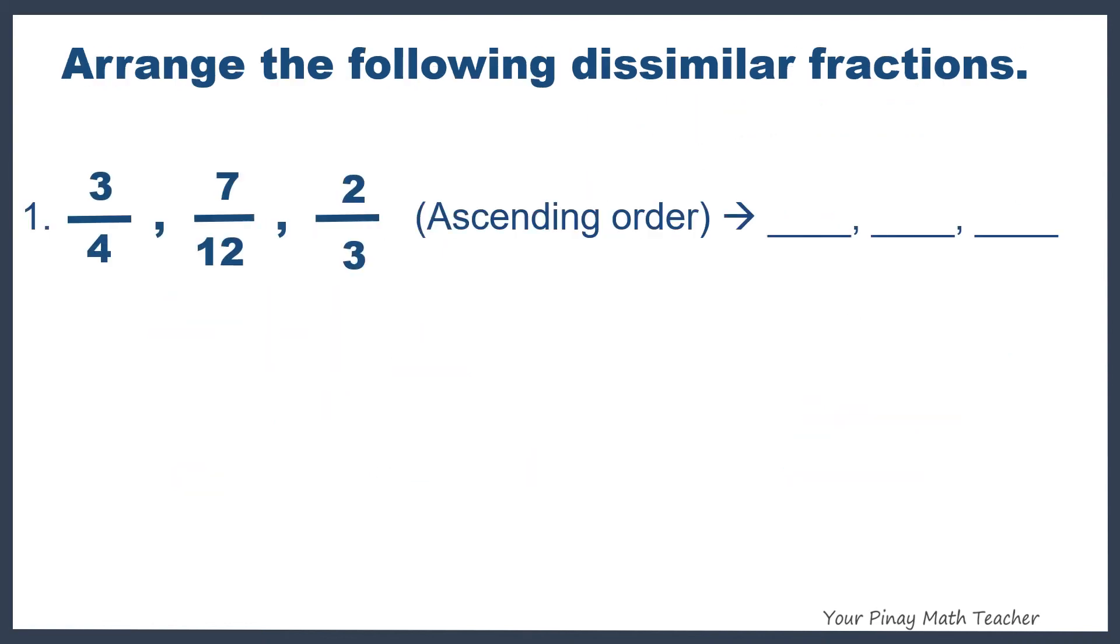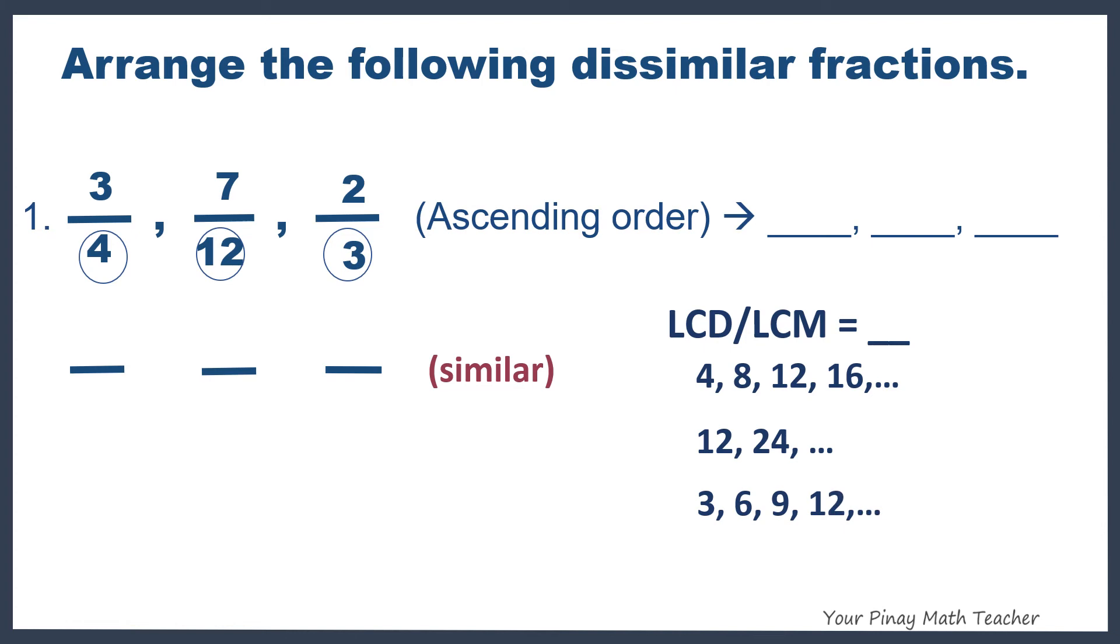let us arrange the following dissimilar fractions such as 3 4ths, 7 12ths, and 2 3rds in ascending order or from the least to the greatest. So since the denominators are different, we have to make them similar by finding its LCD or LCM. So these are the first few multiples of 4, 12, and 3. Based on the list, our LCD or LCM is 12. 12 is now our least common denominator. So look at 3 4ths. What will you multiply to 4 to get 12? 3. Do the same in the numerator.